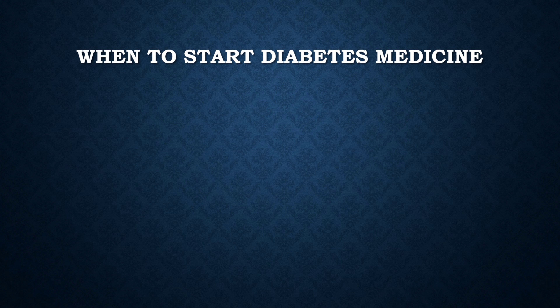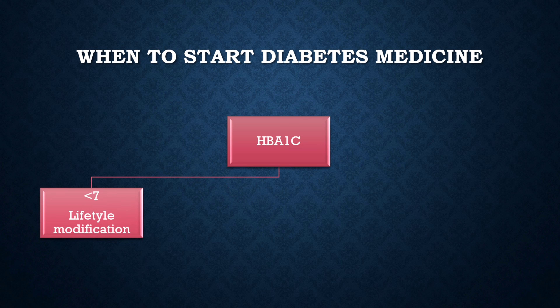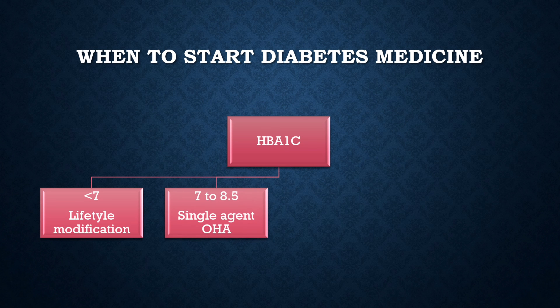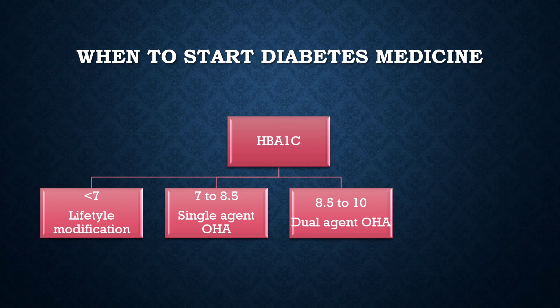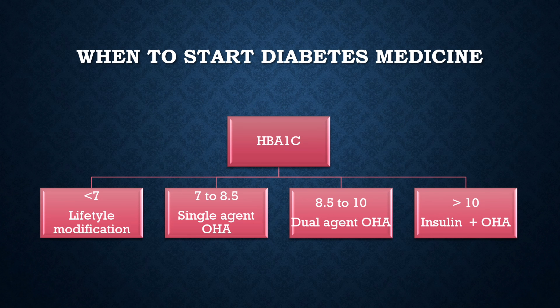When to start diabetes medicine? As per the latest guideline, it is based on the HbA1c value. If HbA1c is less than 7, there is no requirement of OHA or oral hypoglycemic agent. If HbA1c is between 7 to 8.5, we can use a single agent OHA. If it is between 8.5 to 10, we use dual agent OHA, and if it is more than 10, we go for insulin plus OHA or triple oral hypoglycemic therapy.